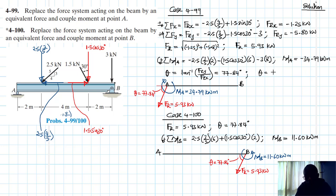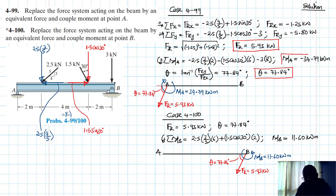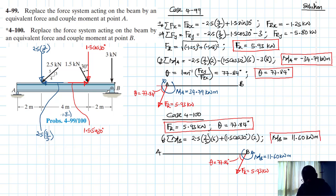Let's outline the solutions. We have the resultant force, which is common to both case 1 and case 2, and the angle is common to both of them. Then we have the moment summation about point A, which is negative — clockwise — of 34.79 kN·m. And we have a counterclockwise moment, which is positive, about point B of 11.60 kN·m. I hope the video was helpful. If it was, give me a thumbs up, like my video, and continue subscribing to my channel. Goodbye and see you in my next screencast.